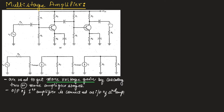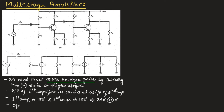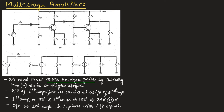The amplified output of the second amplifier is coupled to the load resistor, which is in phase with the input signal applied. The first amplifier produces a 180-degree phase shift and the second amplifier also produces a 180-degree phase shift, so the overall phase shift will be 360 degrees, or 0 degrees. That is why the output at the second amplifier is in phase with the input signal.